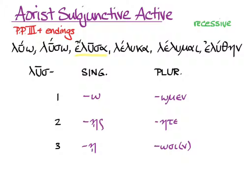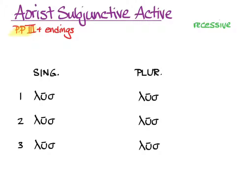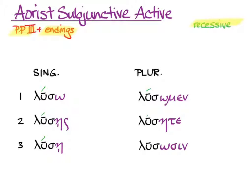Again, there's no default translation without context, but this form has simple aspect because we're in the aorist. Let's put the aorist subjunctive active together for Luo. The un-augmented stem 'lus-' goes in for all persons and numbers, then we add the endings: -ō, -ēs, -ē, -ōmen, -ēte, -ōsi or -ōsin. Applying recessive accent, the acute goes back as far as it can, giving us: lūsō, lūsēs, lūsē, lūsōmen, lūsēte, lūsōsin.